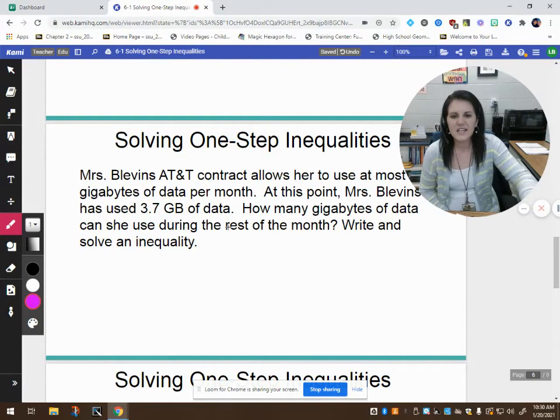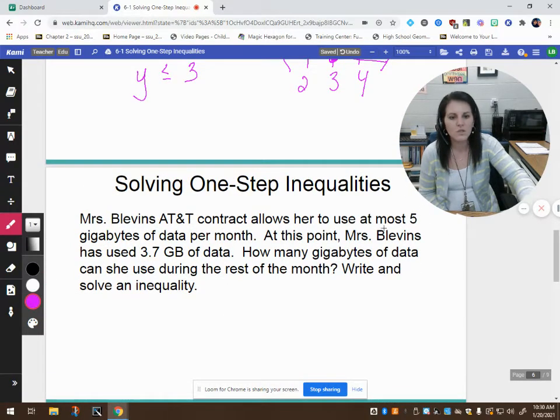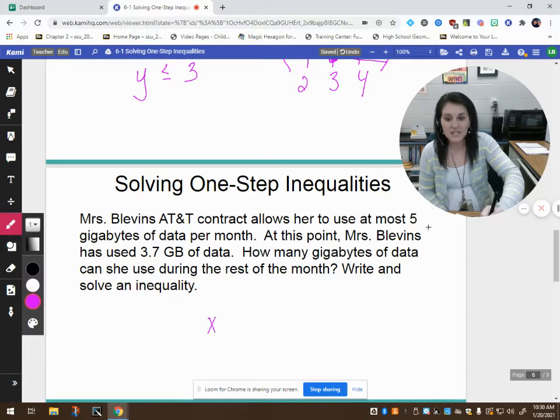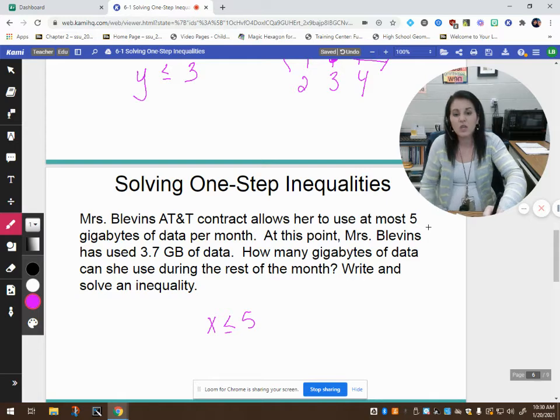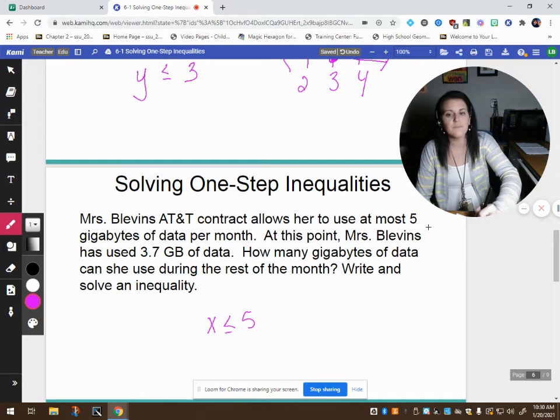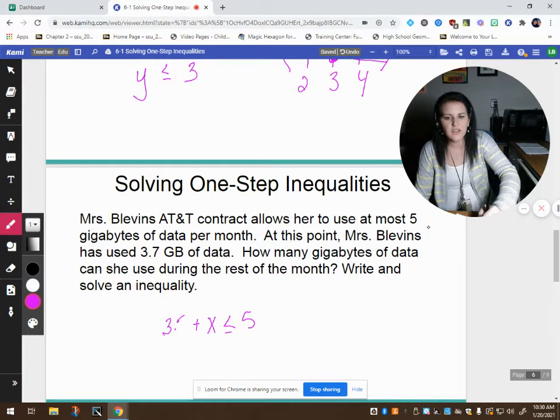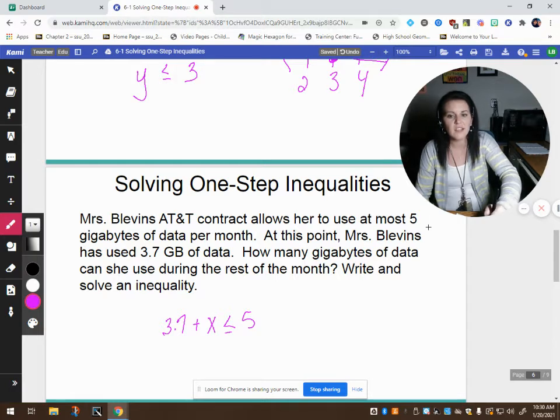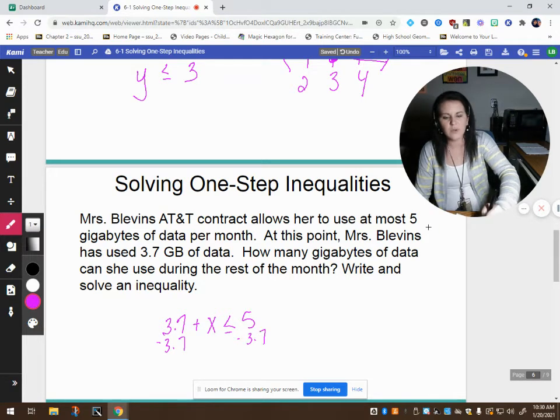Ms. Blevins' AT&T contract allows her to use at most 5 GB. She can use less than 5 GB. She can use exactly 5 GB, but she cannot use more than 5. At this point Ms. Blevins has used 3.7 GB of data. So I've already used the 3.7 GB. So I'm just going to say I've got x amount left plus the 3.7 that I've already used and that has to be less than or equal to 5.